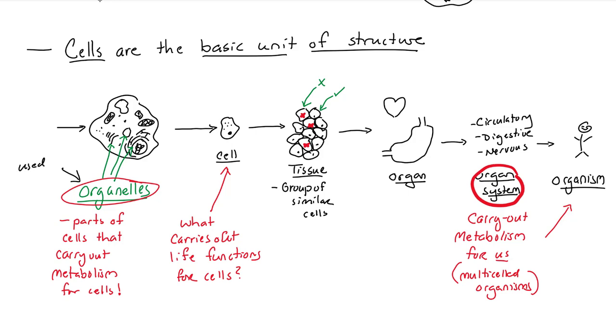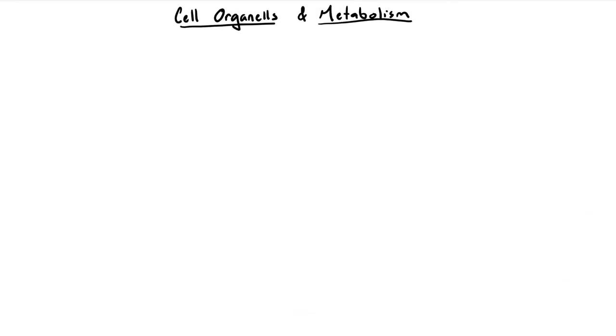These organelles use and make things called compounds. Things like glucose, C6H12O6, oxygen O2, and carbon dioxide, CO2. If you want to take it further, compounds are made up of atoms. Atoms are made up of protons and neutrons and electrons. So let's now take a look at the organelles and how they carry out these life functions.